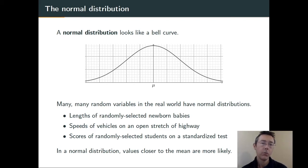This probability distribution comes up all the time in real life. For example, if we measure the lengths of randomly selected newborn babies, measure the speeds of vehicles on an open stretch of highway, or look at the scores of randomly selected students on standardized tests, all of those random variables will have approximately normal distributions.